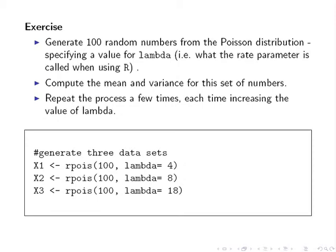Here is what I suggest we do. We generate 100 random numbers from the Poisson distribution. I didn't really pick 100 for any particular reason, it's just a nice round number. And we're going to specify a value for lambda, which is what the rate parameter is called in R. We're going to compute the mean and variance for this set of numbers, and we're going to repeat this process a few times, increasing the value of lambda each time.